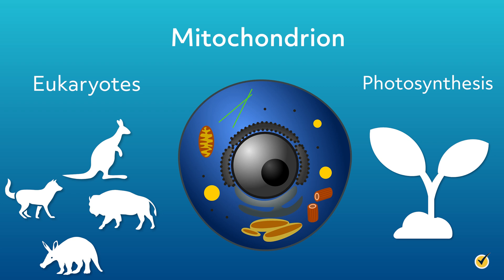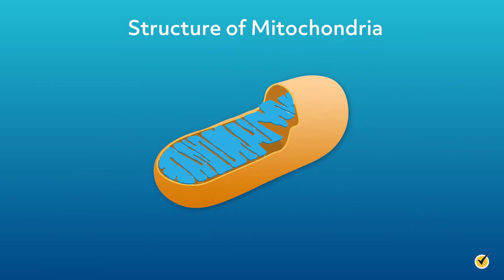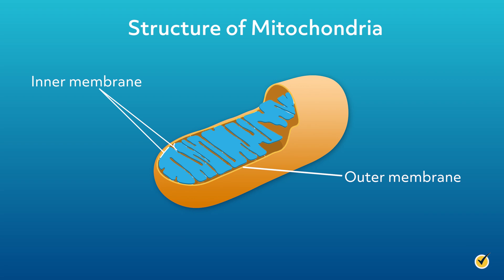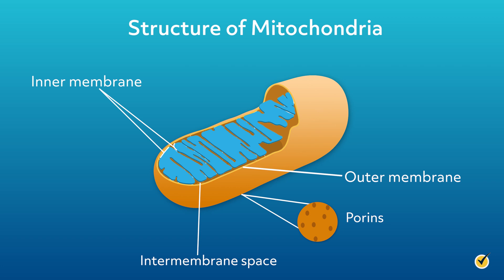Let's go over the general structure of mitochondria. Mitochondria are a little larger than other organelles in a typical cell and have a special double membrane which contributes to their function. The double membrane consists of the inner membrane and the outer membrane. The outer membrane contains proteins called porins that allow small molecules like sugars and ions to pass through. The inner membrane is home to lots of proteins that help with the processes of the electron transport chain. These membranes also help define two mitochondrial compartments: the intermembrane space, formed between the outer and inner membranes, and the matrix space, formed by the folding of the inner membrane.